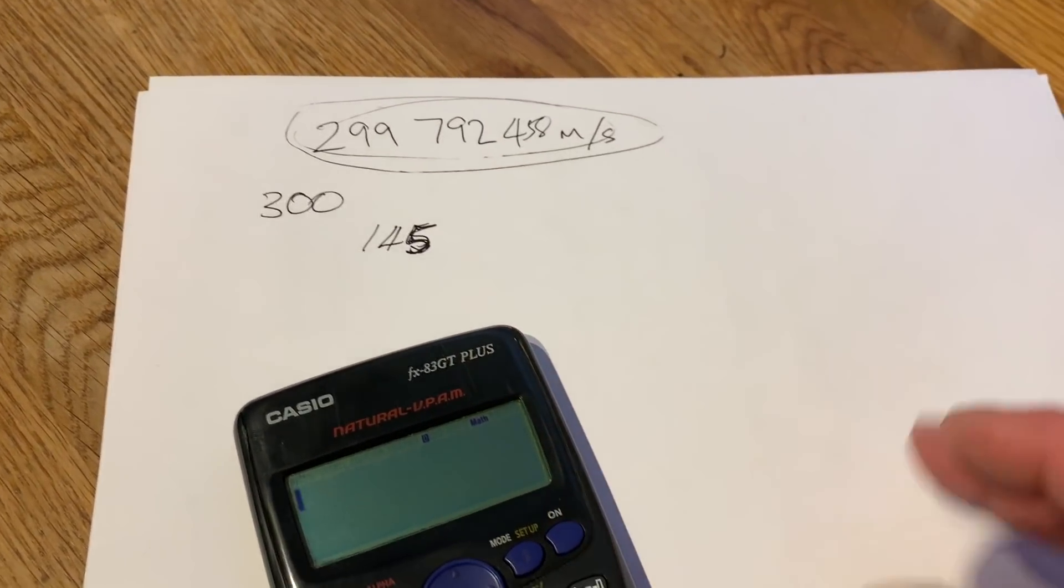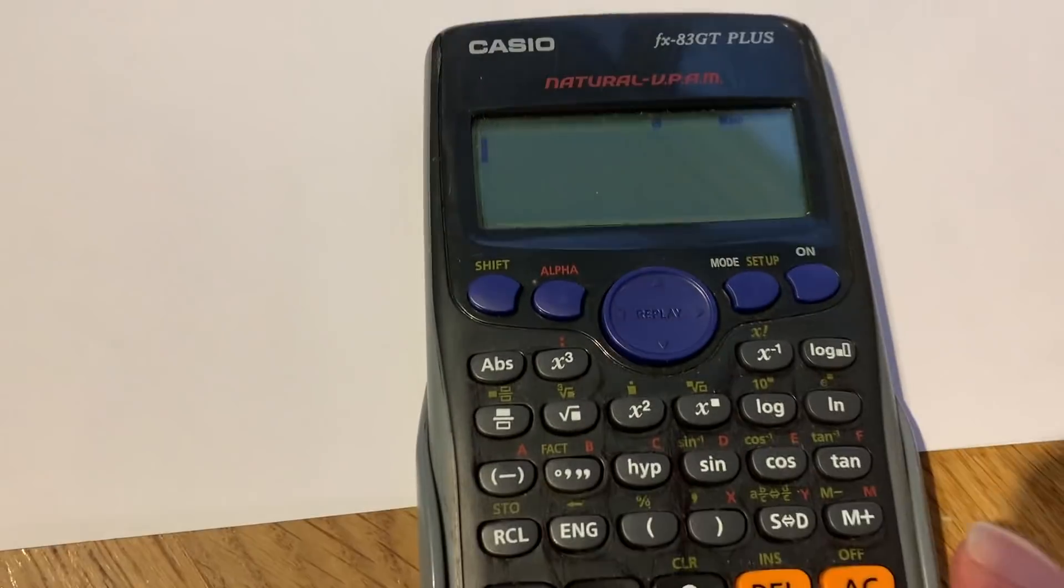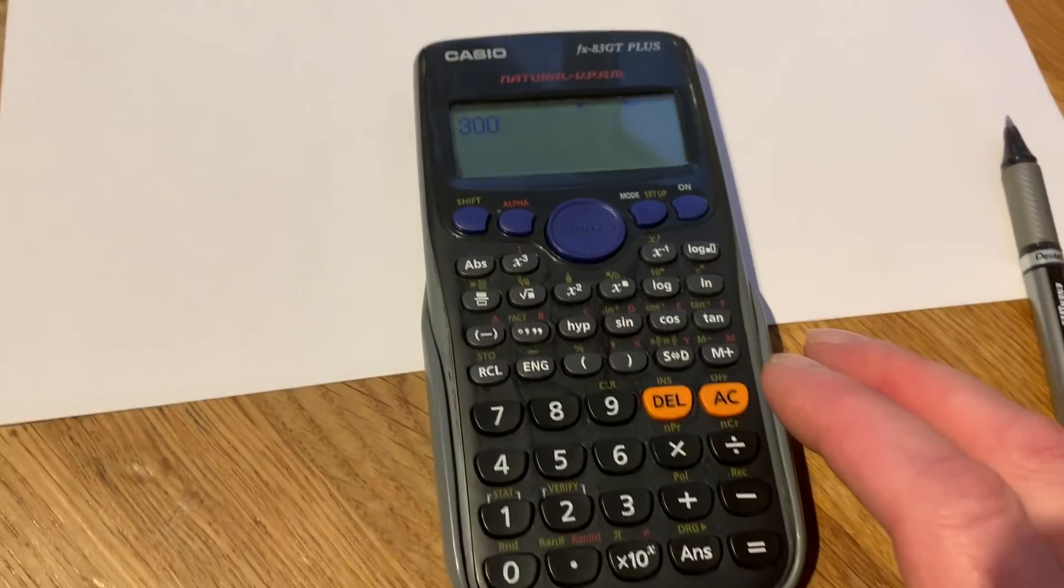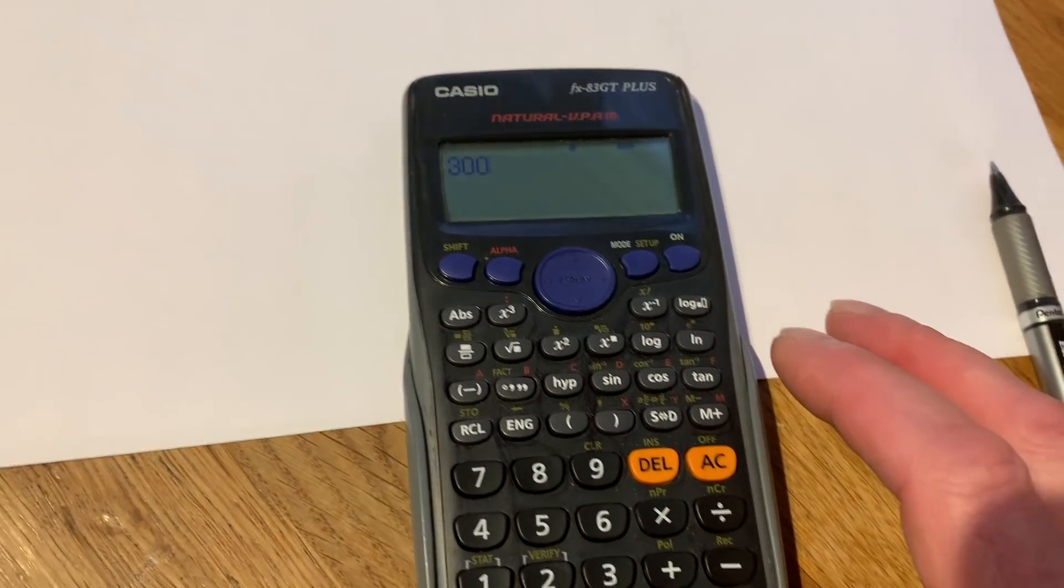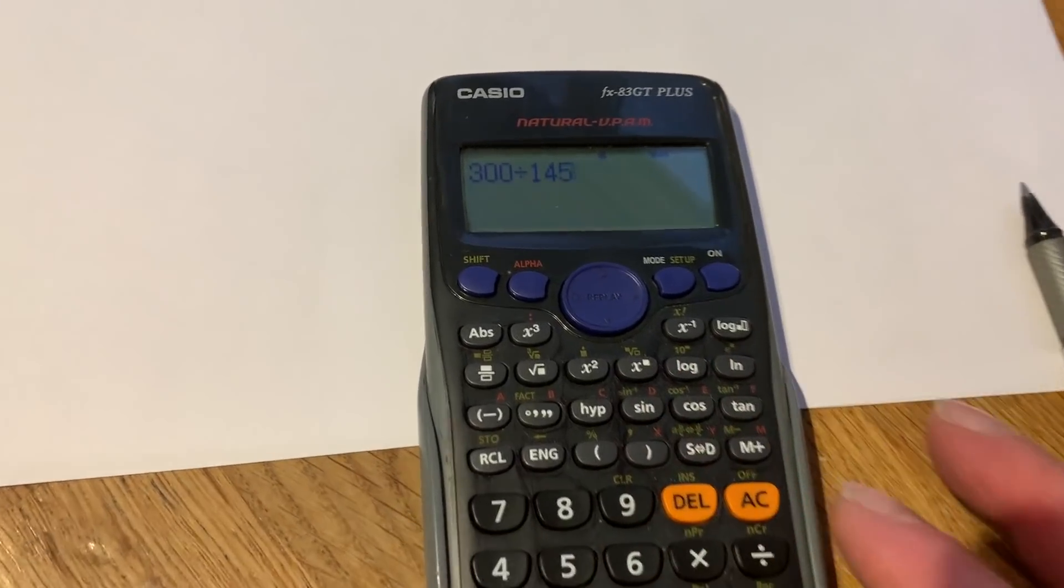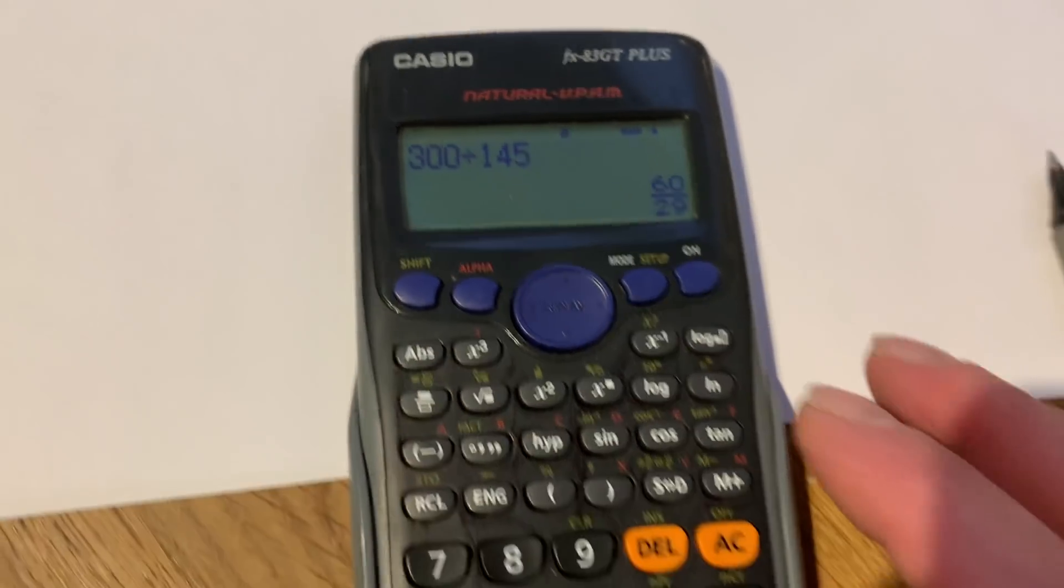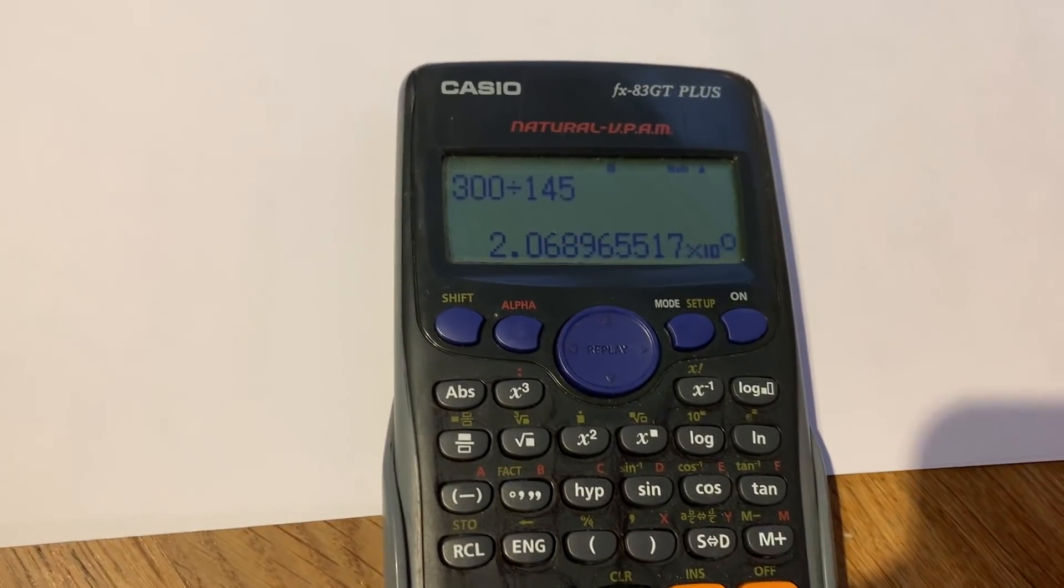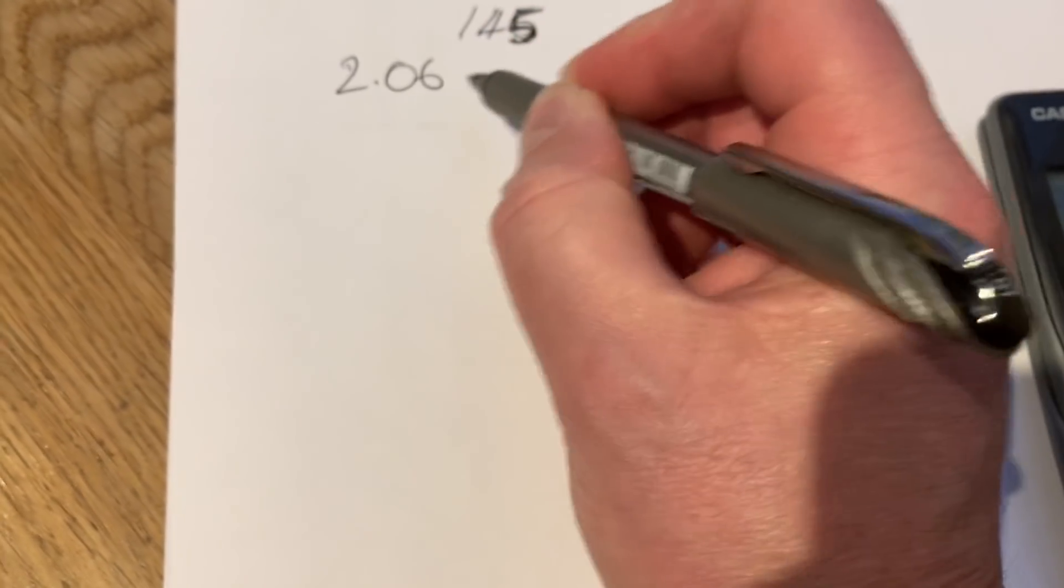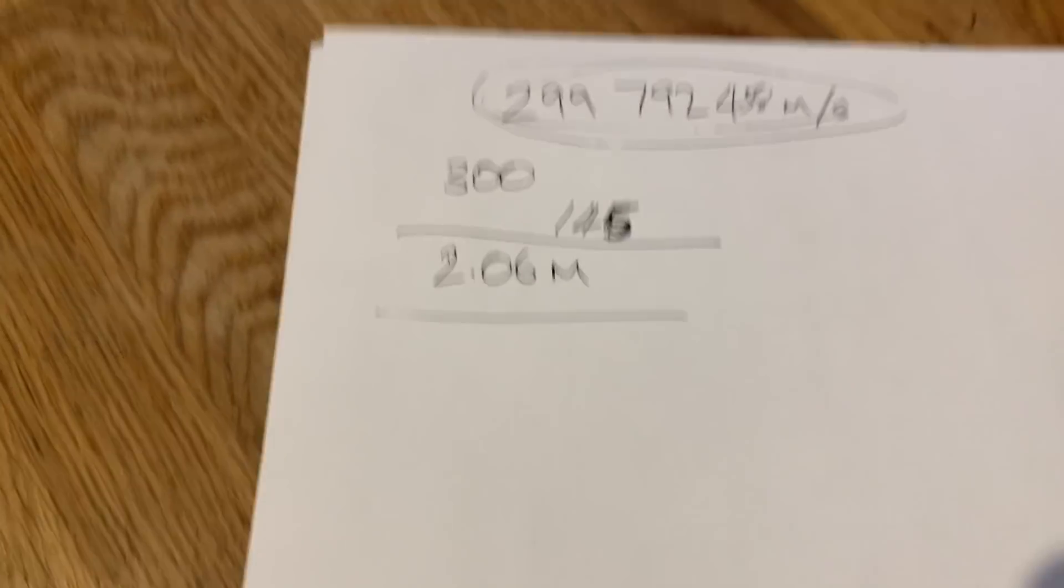So if we divide 300 by 145, that equals 2.06. So it's actually the 2.06 meter band. That's the wavelength, but of course we just round it off to the two meter band.